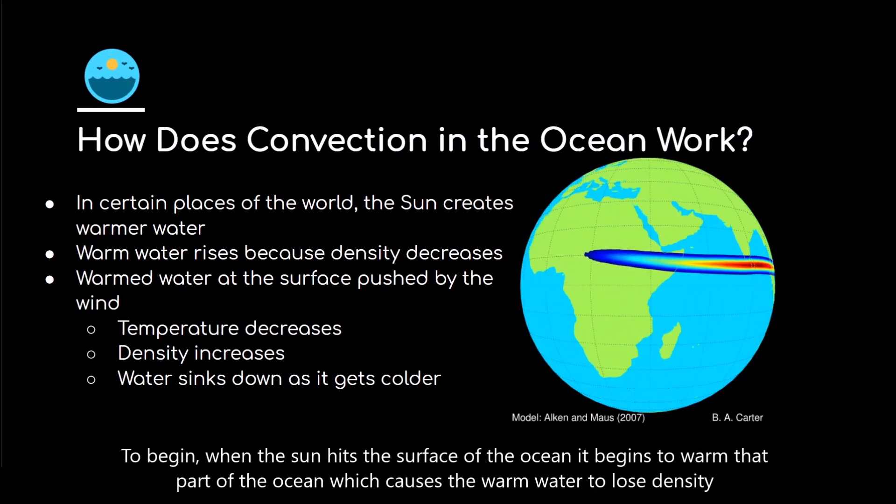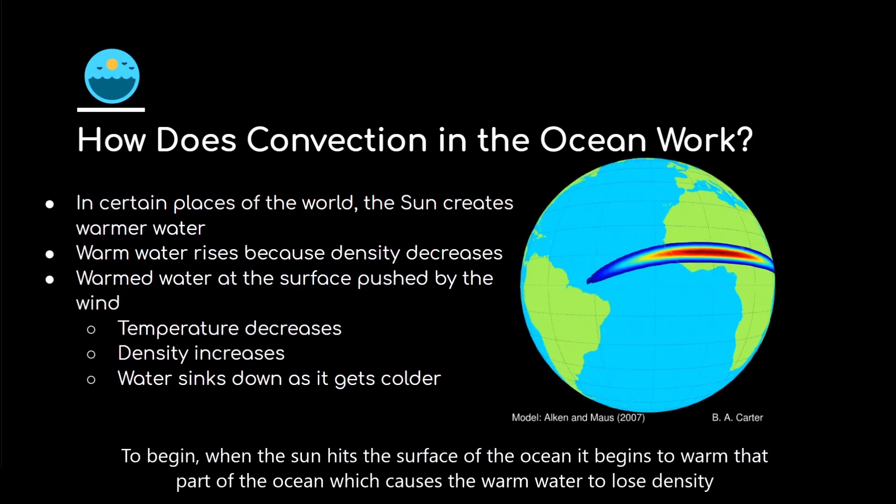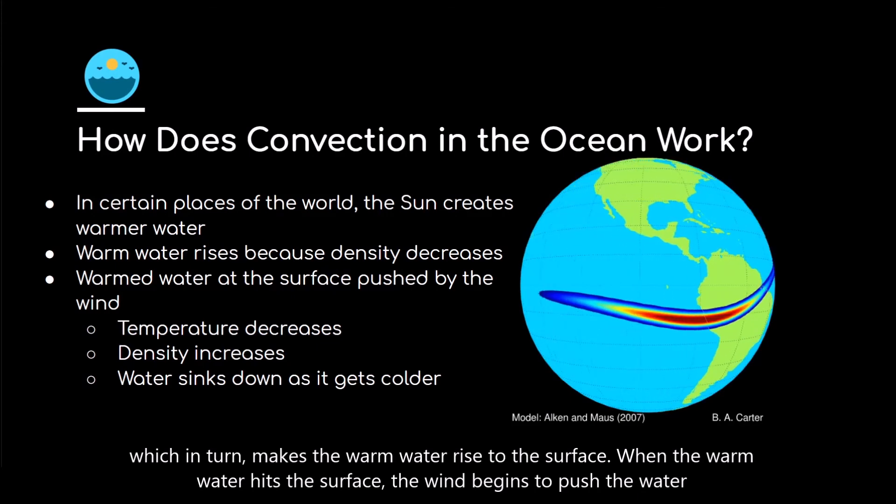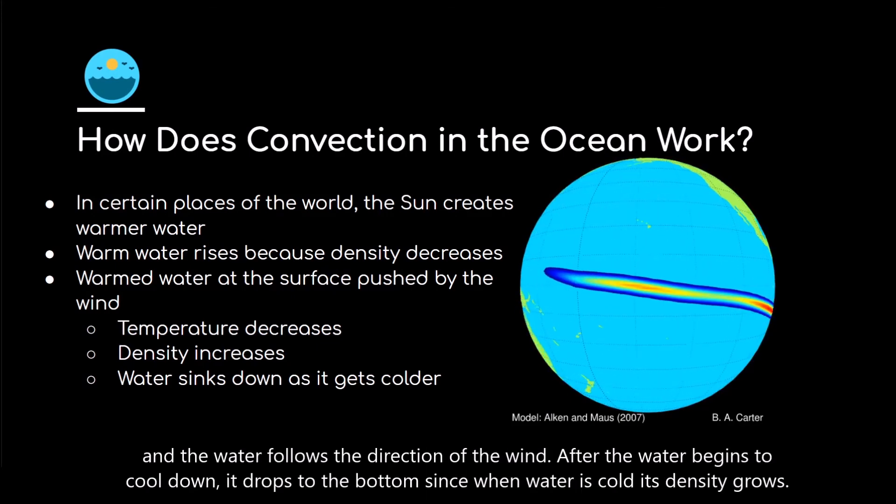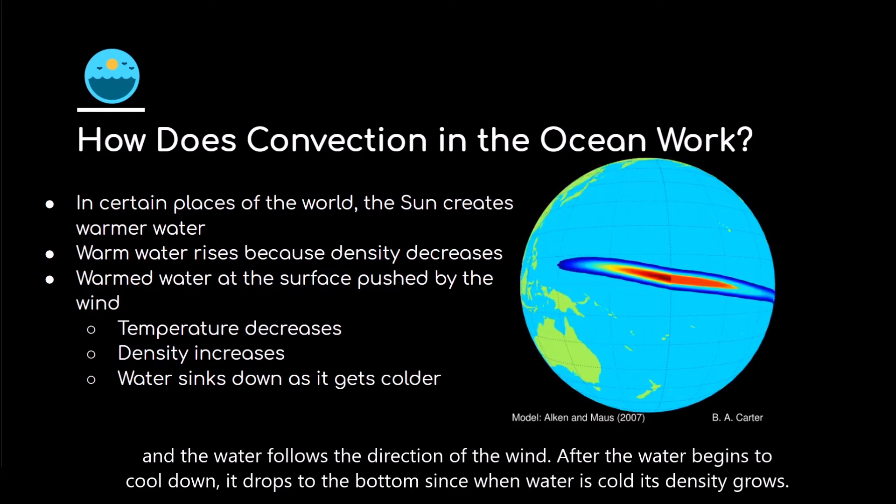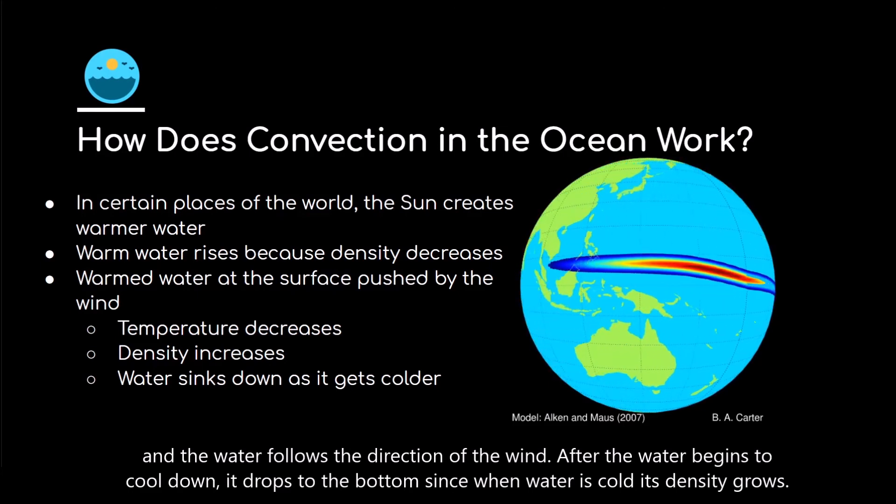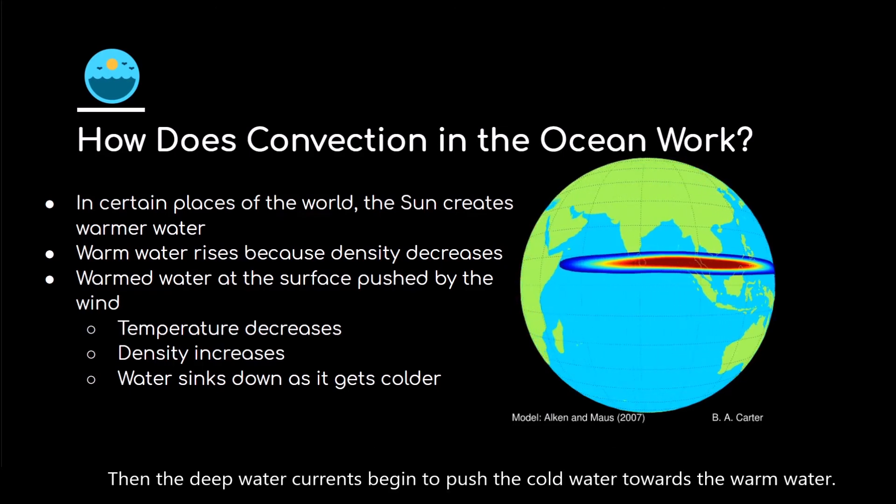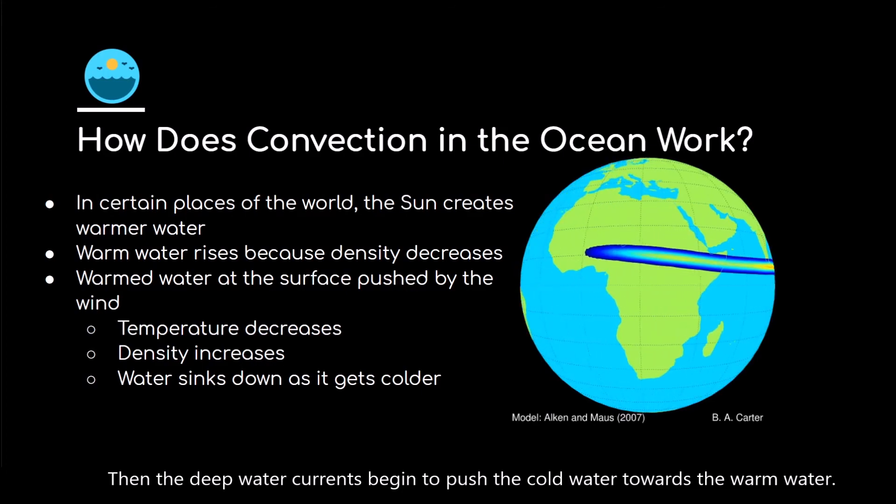To begin, when the sun hits the surface of the ocean, it begins to warm that part of the ocean, which causes the warm water to lose density, which in turn makes the warm water rise to the surface. When the warm water hits the surface, the wind begins to push the water and the water follows the direction of the wind. After the water begins to cool down, it drops to the bottom, since when water is cold, its density grows.